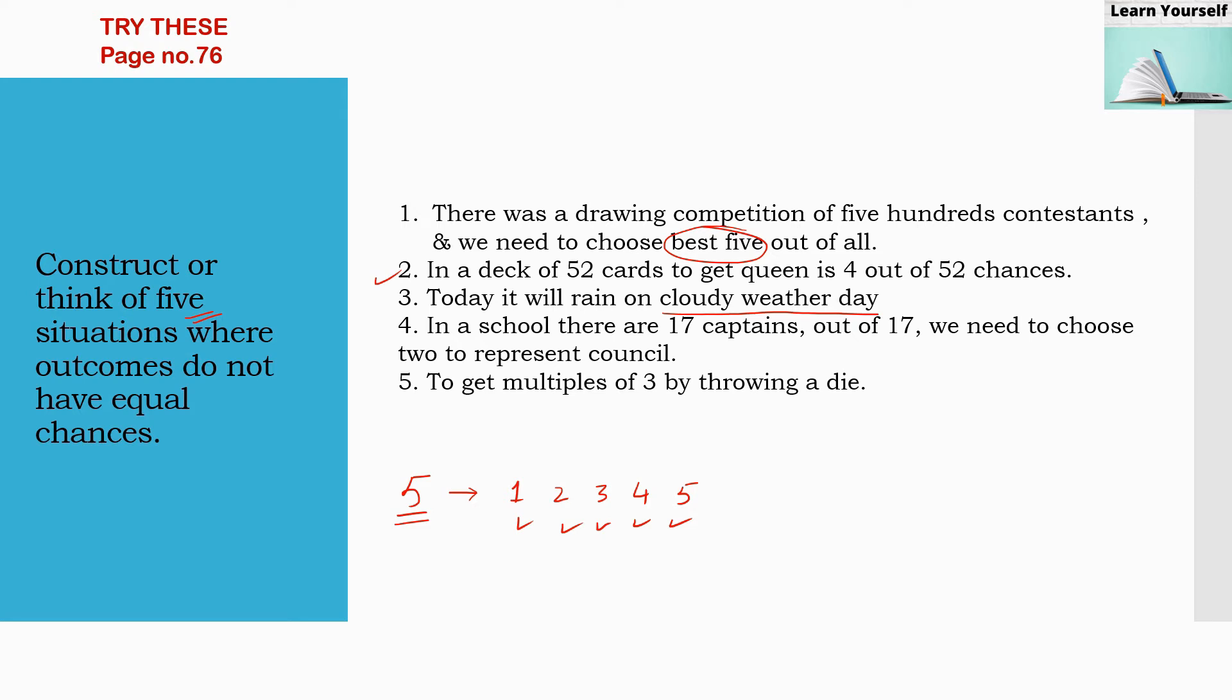To get multiples of 3 by throwing a die. When you are throwing a die, there are 6 numbers. So out of this 6 numbers we required multiple of 3. So multiples of 3 are 3 and 6. So these numbers and these chances are not equal. We require 2 numbers out of 6 numbers. So chances are not equal.